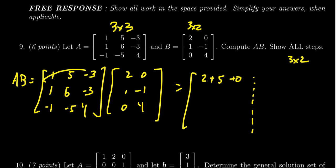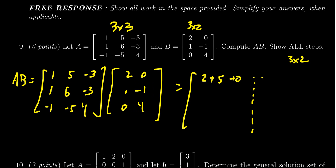Next we're going to do the first row times the second column. That gives us one times zero which is zero, plus five times negative one which is negative five, minus three times four which is negative twelve.